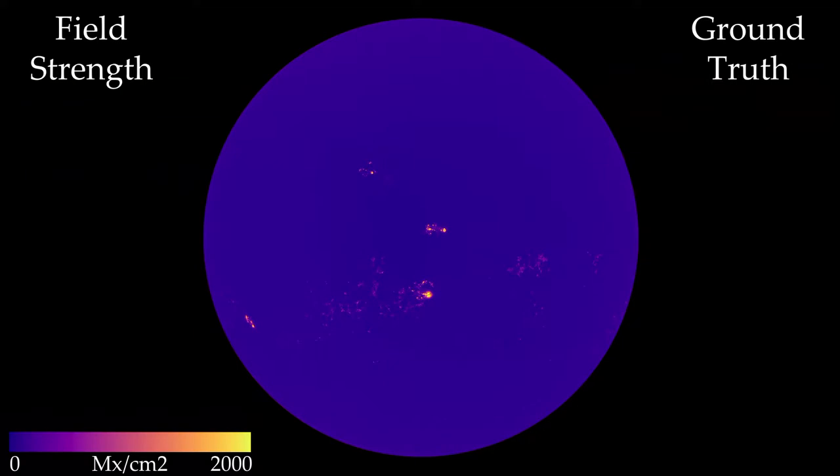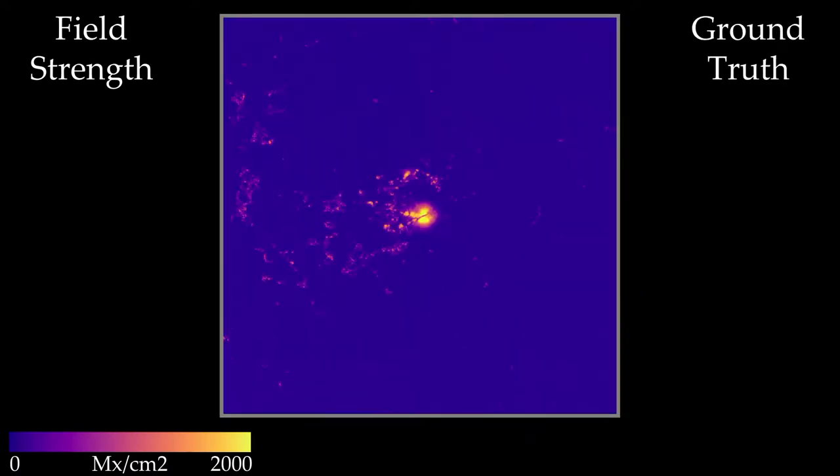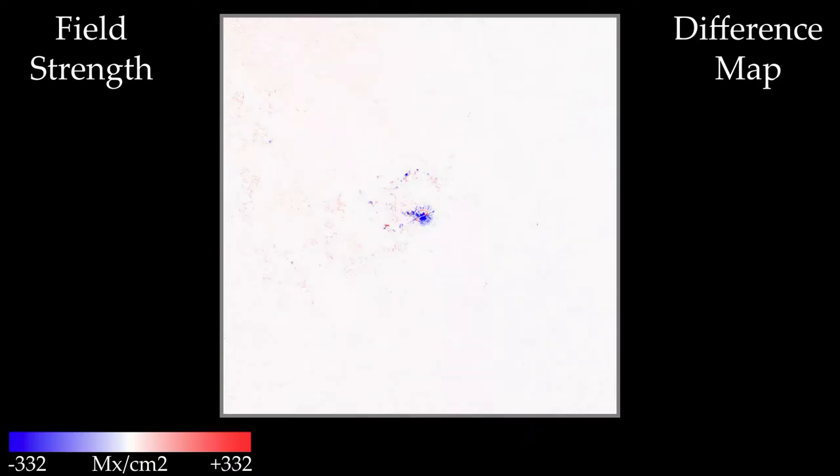So now I'm going to talk about results. Here is a ground truth VFISV output of field strength for the sun from a certain time. And we have it ranging from 0 to 2000 mx per centimeter squared. Now, our prediction looks very similar. So ground truth, prediction, ground truth. It's very hard to see the difference, at least on the full disk. So we can zoom in. We see here our prediction, a ground truth, prediction, ground truth. And then we can use a difference map to understand that our predictions under predicting slightly the active region, except for this sort of line that exists down the middle.